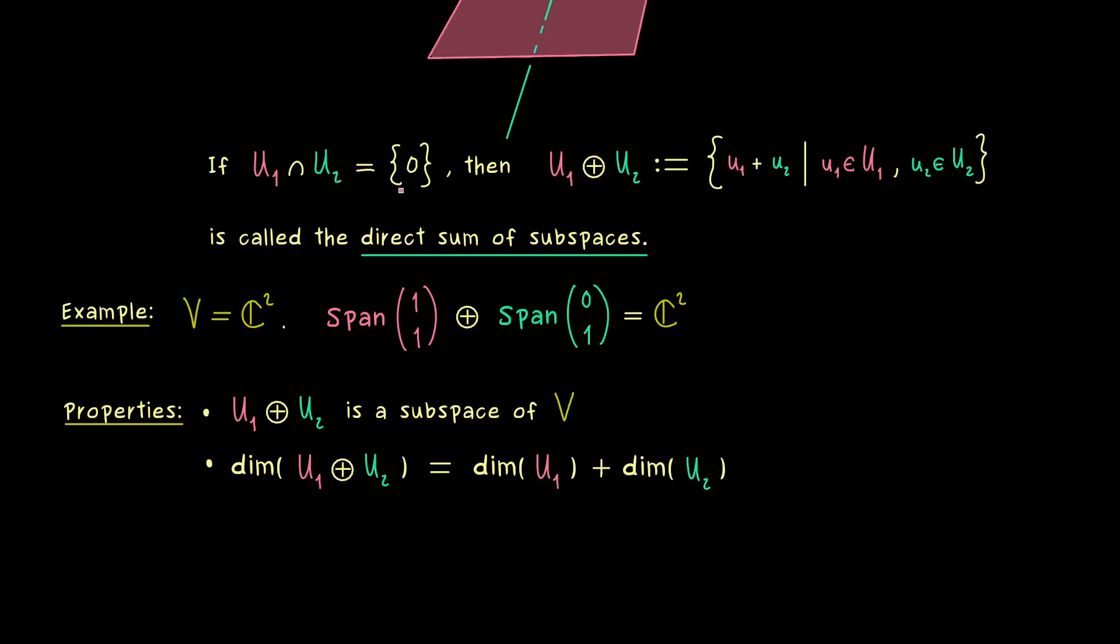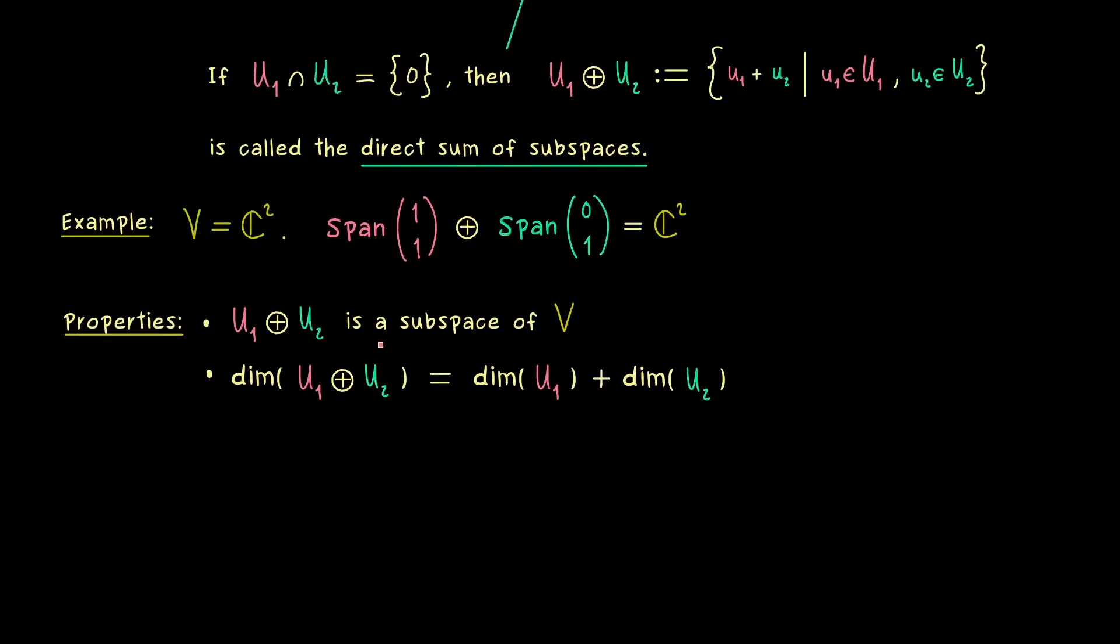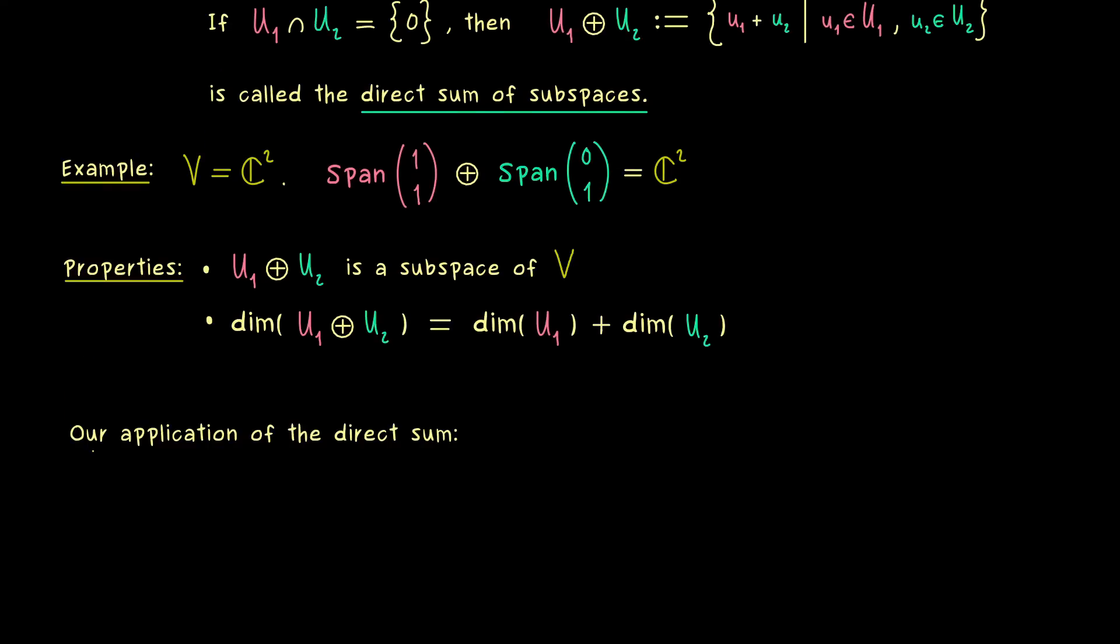Okay, so with that direct sum of subspaces in mind, we can go back to our Jordan normal form. So you could say that this will be our application of the direct sum. This means we also fix our vector space V as C to the power n, and take a general square matrix A.